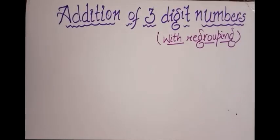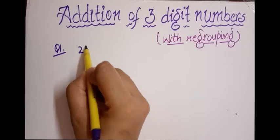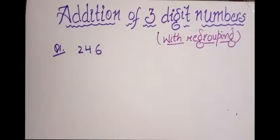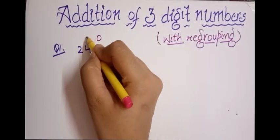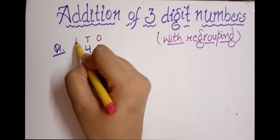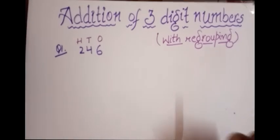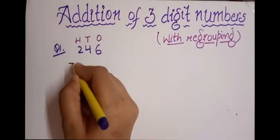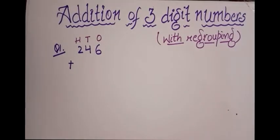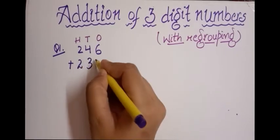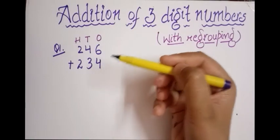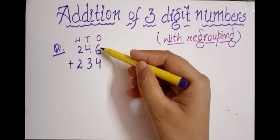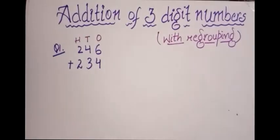Let's take our first example: 246. I'll write the digits in their correct places — six is in the ones place, four is in the tens place, and two is in the hundreds place. Now I'll add 234 using the plus symbol. Keep in mind that you must write one digit below the other: ones below ones, tens below tens, and hundreds below hundreds.